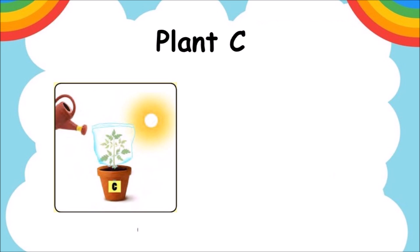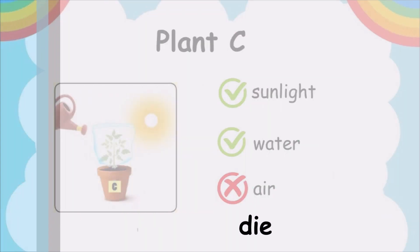Let's look at Plant C. Plant C receives sunlight and water but does not receive air. So what will happen to Plant C after 2 weeks? Plant C will die without air.